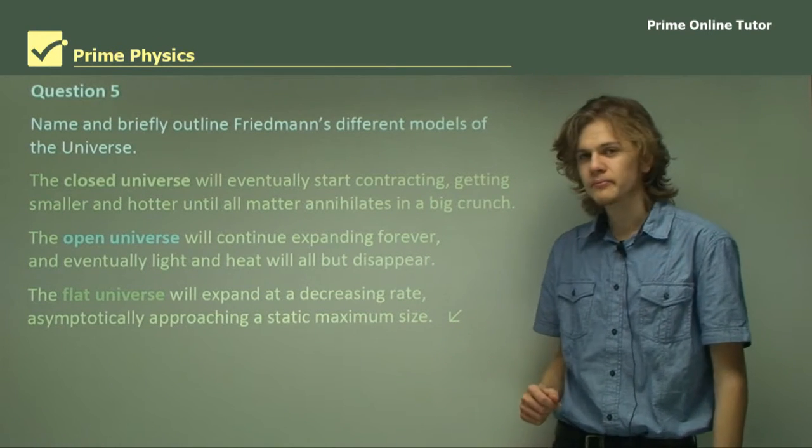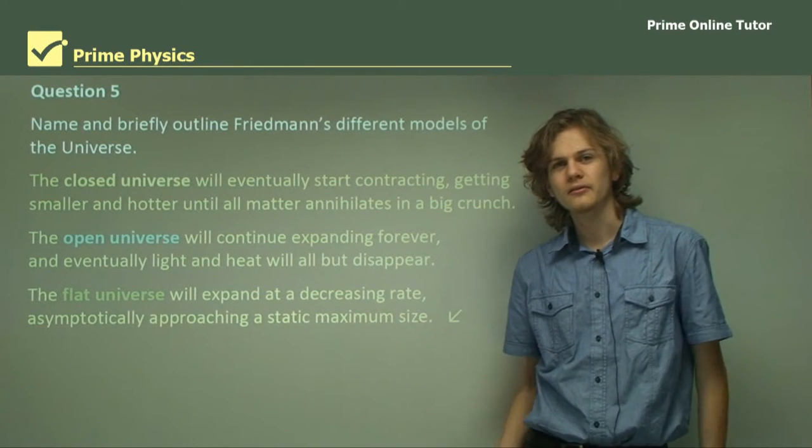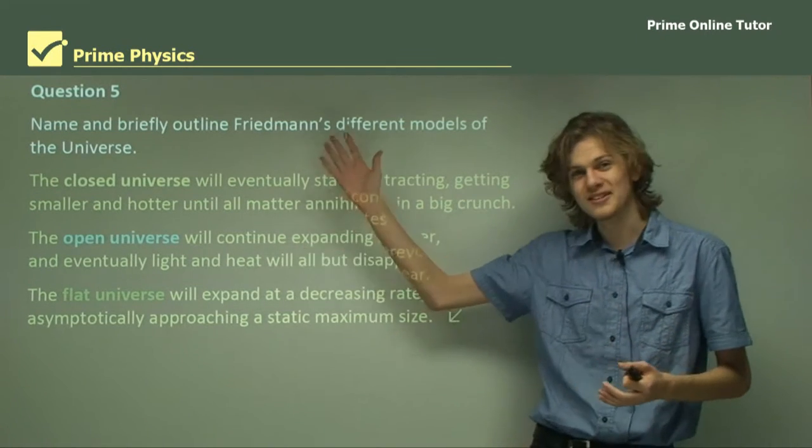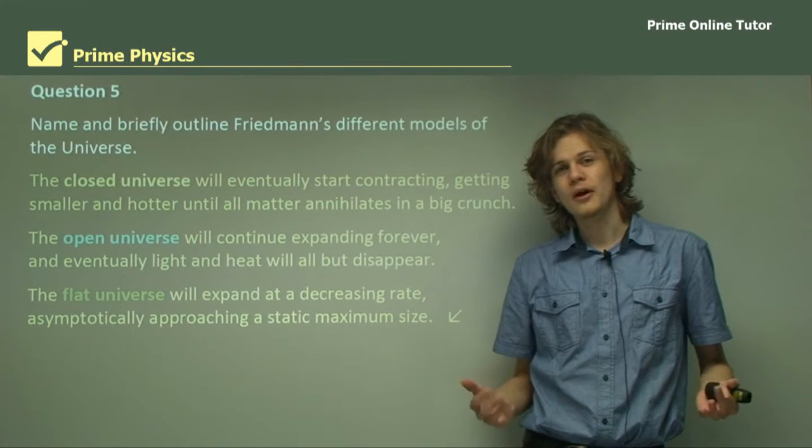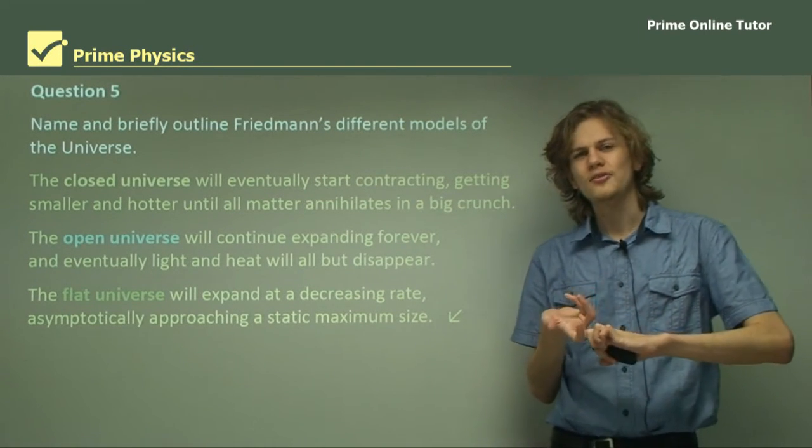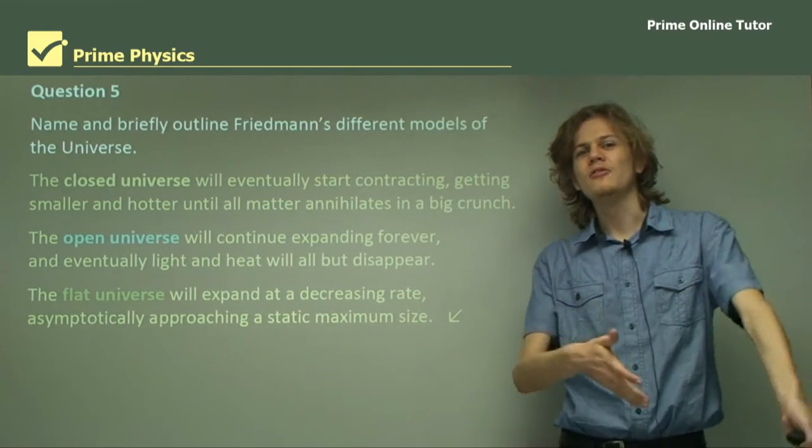Well, that's the end of the questions. So in this section, we've learned about the different models of the universe, which, of course, we can see here. We've learned about Einstein's cosmological constant, and some other predictions about the beginning and the fate of our universe.